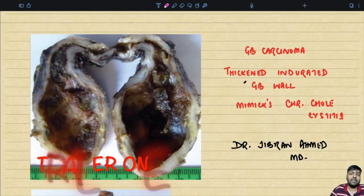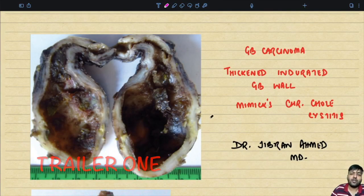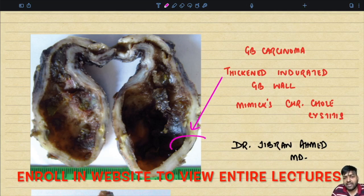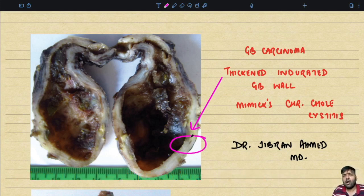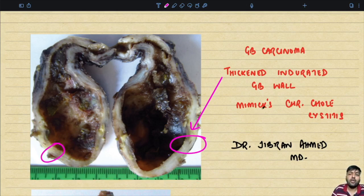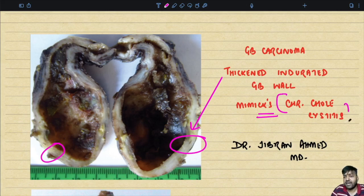This is the gross appearance. Very commonly, gallbladder carcinoma presents as a thickened mucosa. You can see that the wall is completely thickened. You cannot see any mass — just a very thickened gallbladder wall. This is a very thickened indurated gallbladder wall, and it is very much mimicking chronic cholecystitis.